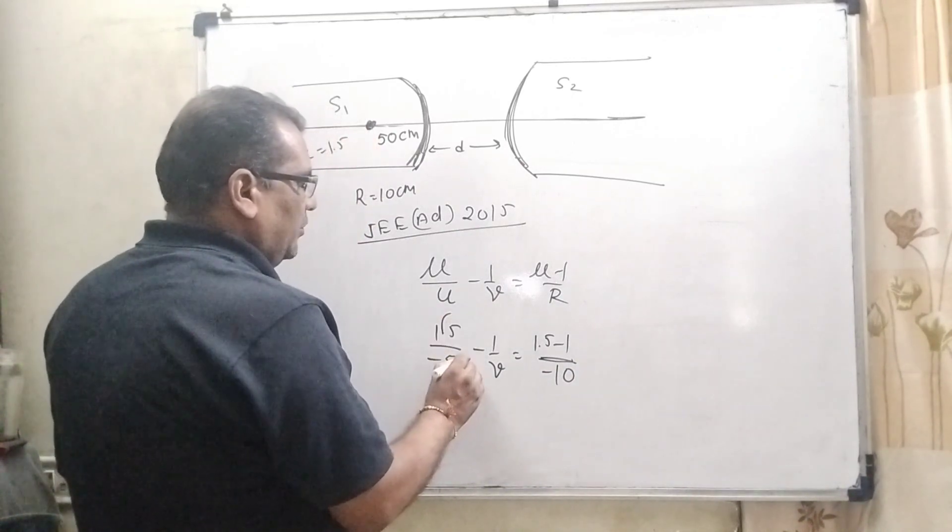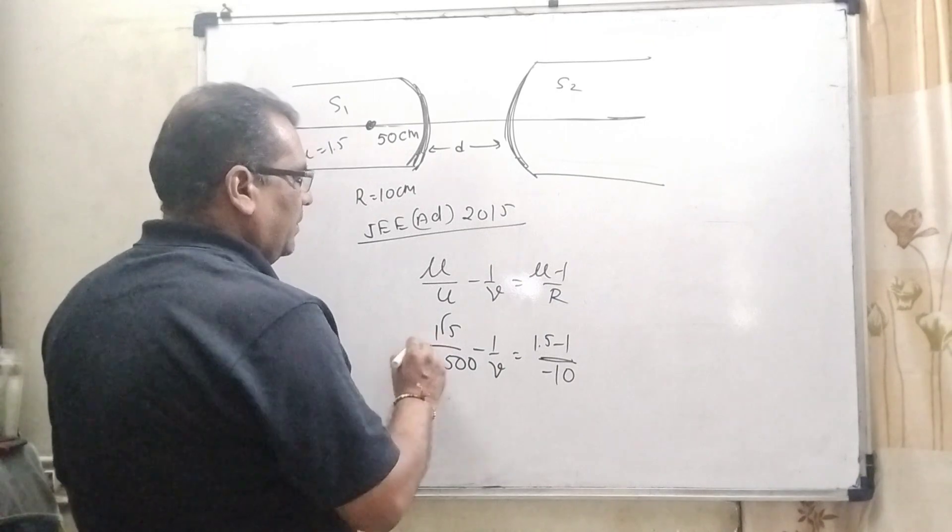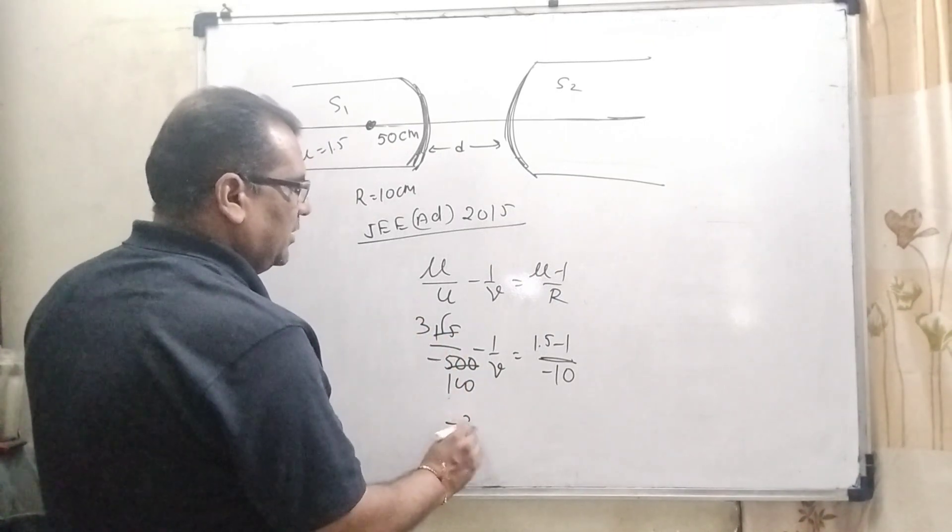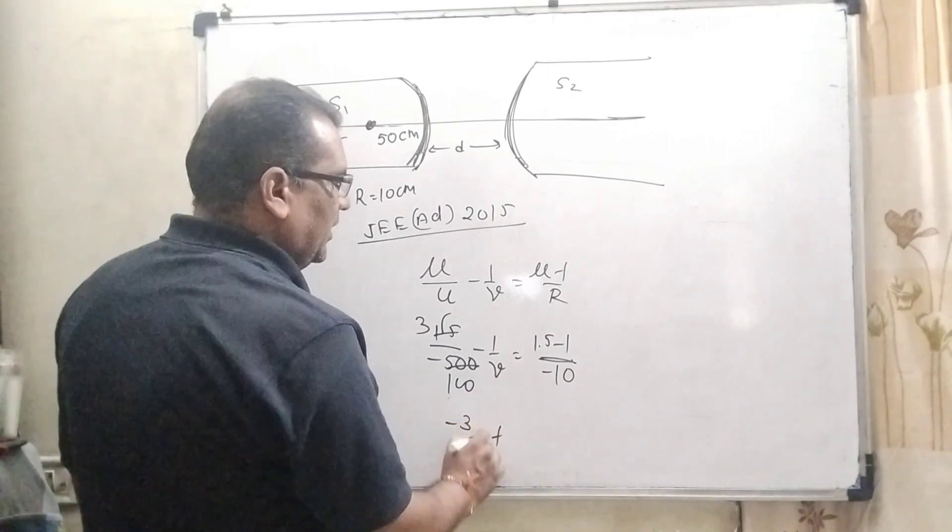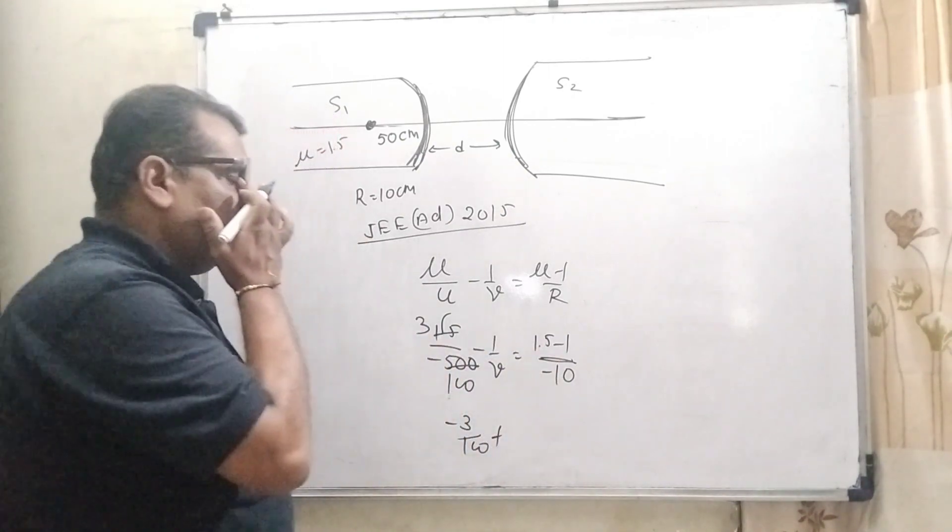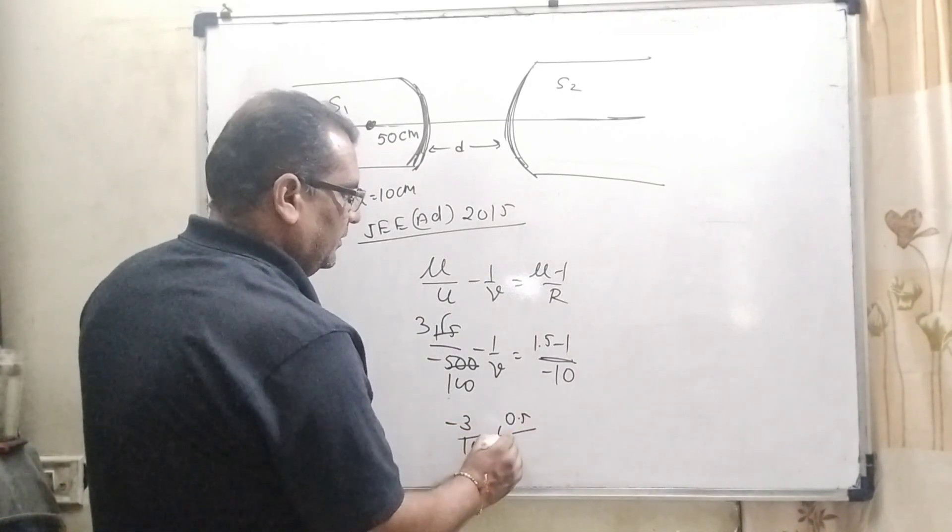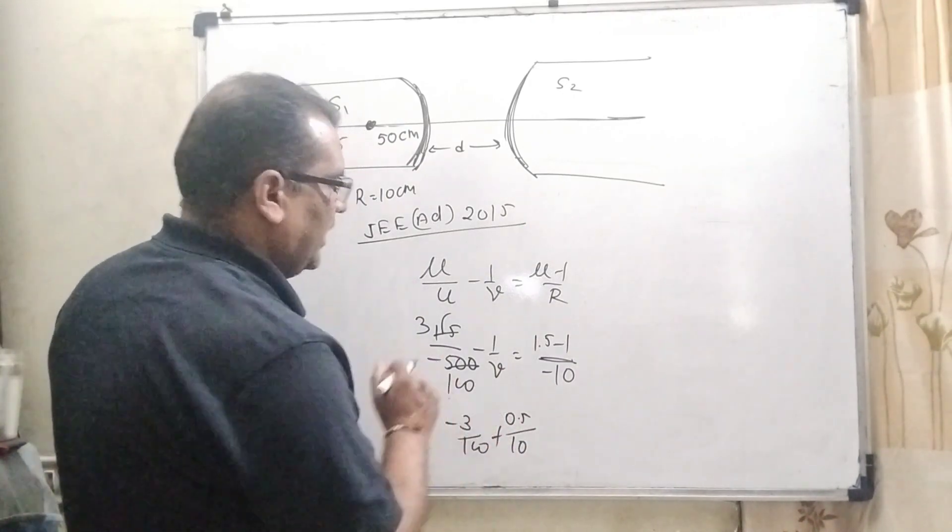Because this surface works as a concave. So, here R becomes minus 10. This decimal will be removed. I am using 0.5 as 15/100. So, minus 3 by 100. And this becomes plus because 1.5 minus 1 means 0.5. And 10. And now transposing that will become plus.